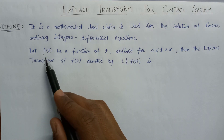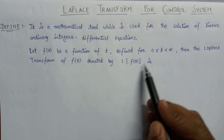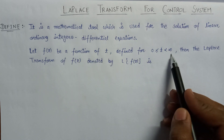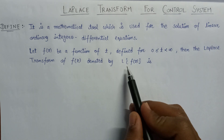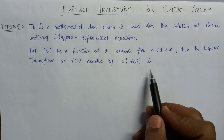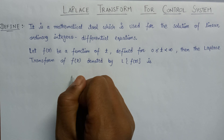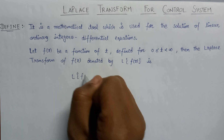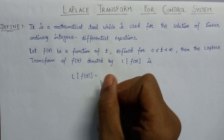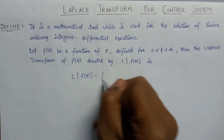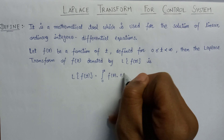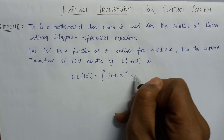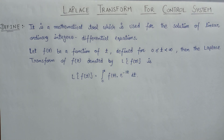Let the function f, which is a function of t, be defined between the range of 0 to infinite. Then the Laplace transform of f, which can also be written as L{f}, is given as the integral from 0 to infinite of f(t) times e to the power minus st, dt. This is the basic formula by which we will calculate the Laplace transform.